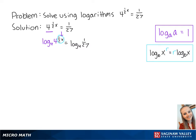we're going to use this next property to get 1 half x times the log base 4 of 4 equals the log base 4 of 1 over 27. Since log base 4 of 4 is equal to 1,